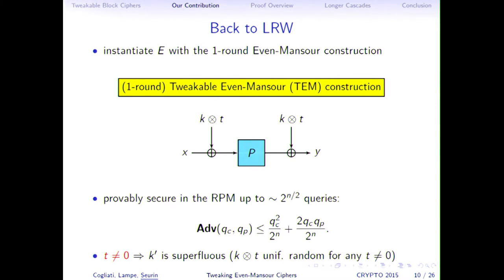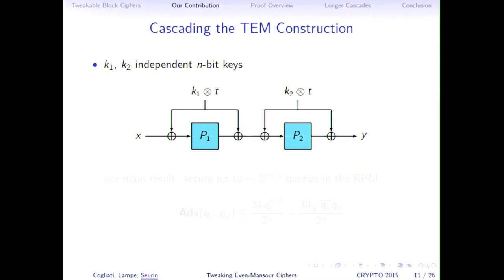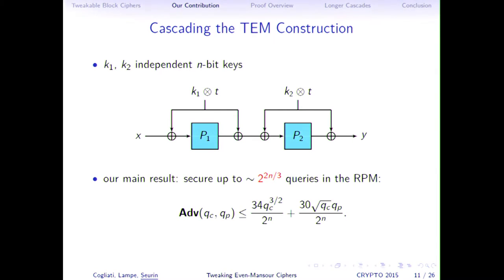The natural idea to get beyond the birthday bound is to chain TEM-1 with independent keys. The main result of this paper is that chaining two independent tweakable Even-Mansour constructions with independent keys K1 and K2 gives security beyond the birthday bound — specifically up to 2^(n/3) queries. The exact bound is given by the formula in the paper.